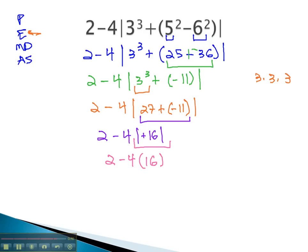And we can finish out the problem by multiplying 4 times 16, which we might need to do on the side. 24, 6, so we have 2 minus 64, and finally to get our answer, we'll add the opposite. The negative is bigger by 62, when we subtract, and we get our final solution.